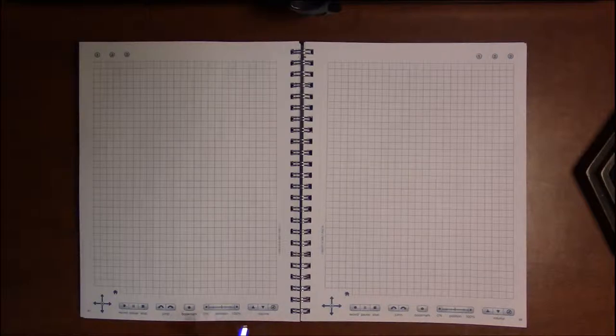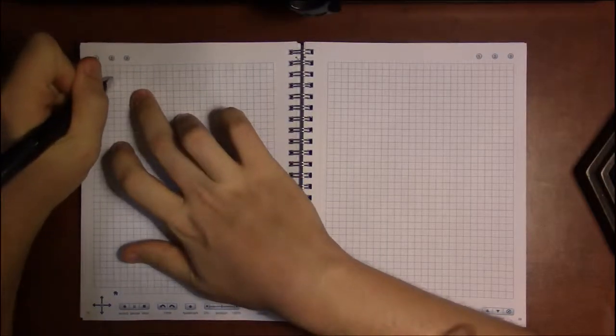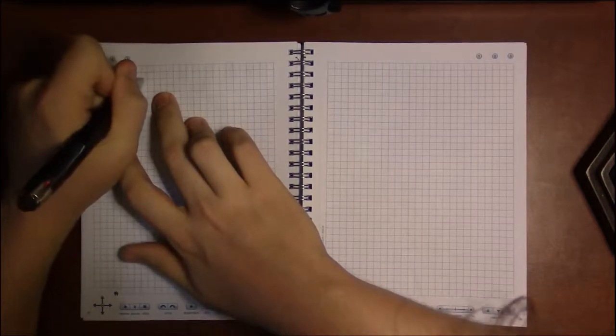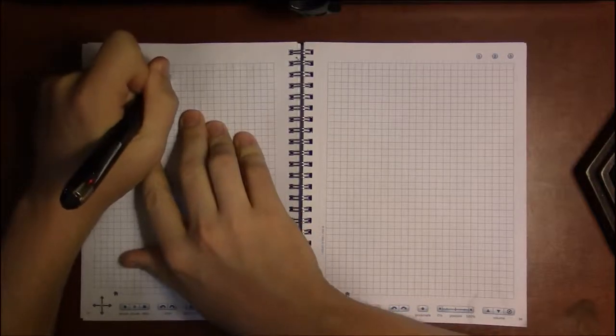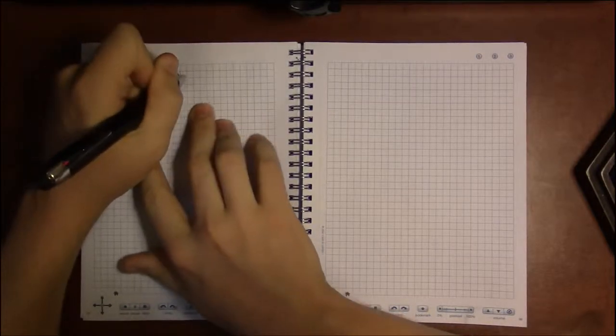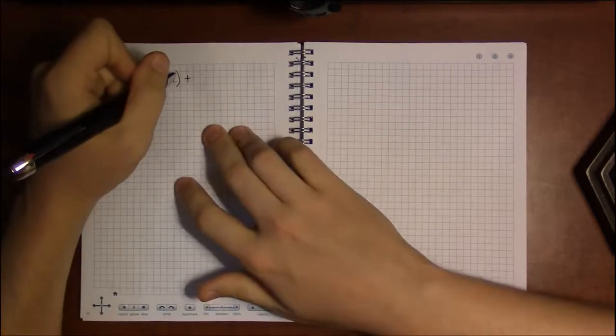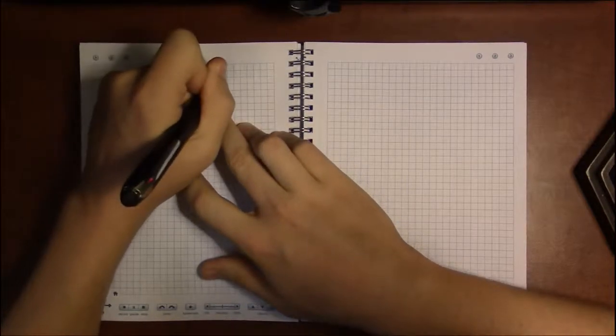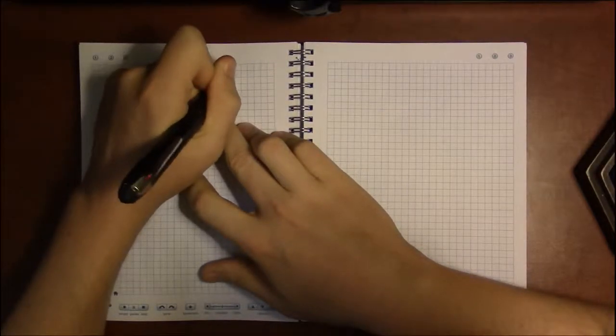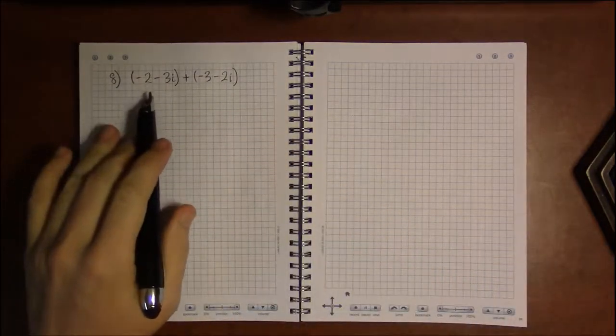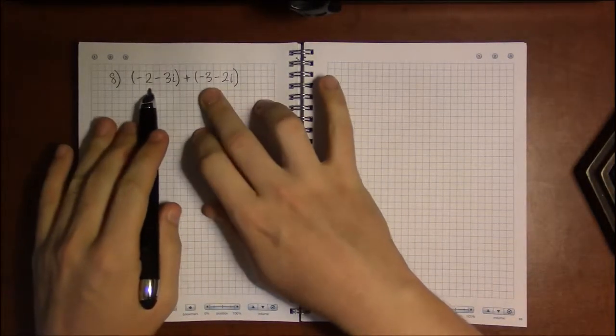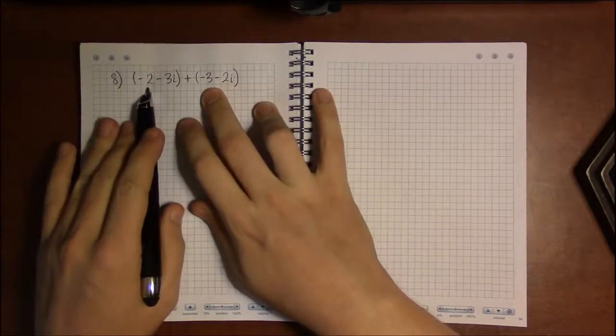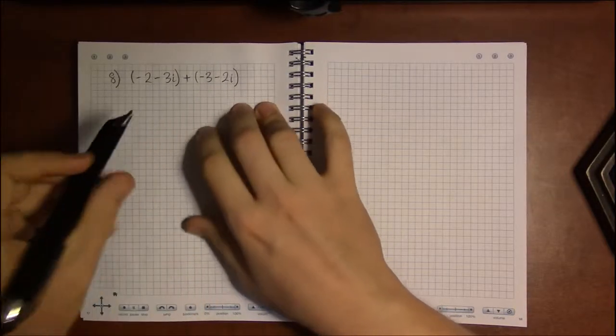Well, put simply, it just couldn't be easier. It's exactly what you want it to be. So if we look at 8: minus 2 minus 3i plus minus 3 minus 2i. We're going to add like terms, and the first pair of like terms is going to be minus 2 and minus 3.